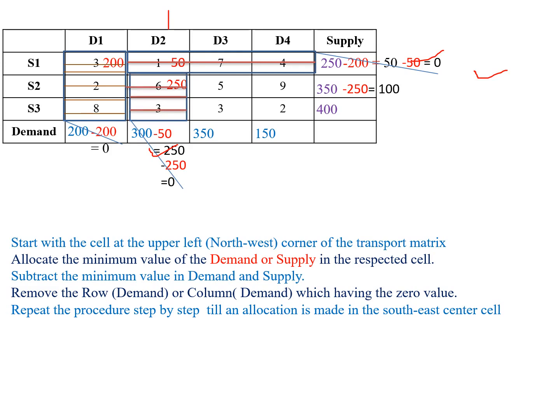Next, the upper-left corner cell is S2 row and D3 column with cost value 5. Supply is 100 and demand is 350. The minimum value is 100. We allocate 100 in the upper-left corner cell, then subtract: 350 minus 100 equals 250 for demand, and 100 minus 100 equals 0 for supply. S2 row has zero value, so we remove the S2 row.